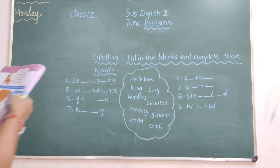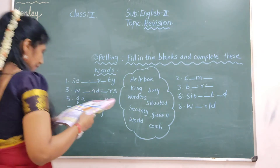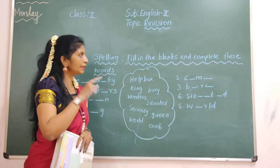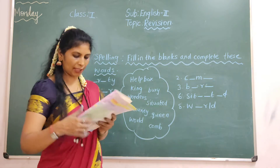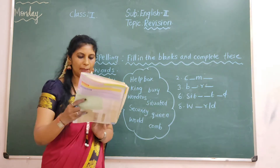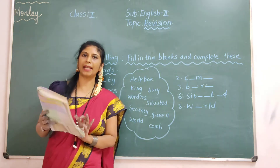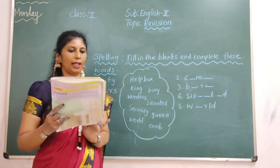Next one. Next is spelling, ok children — complete. Take out your grammar book page number 88.